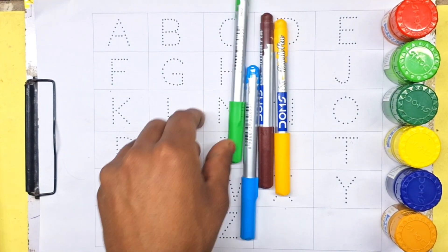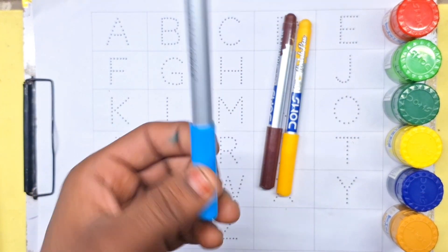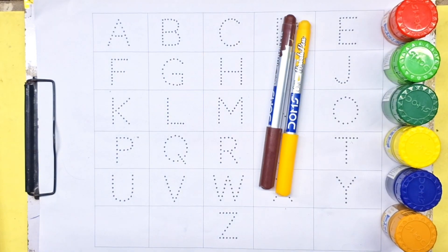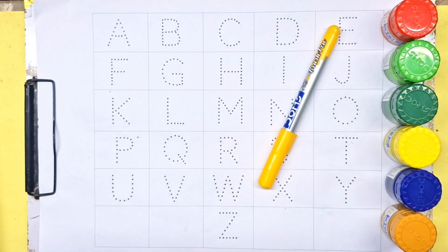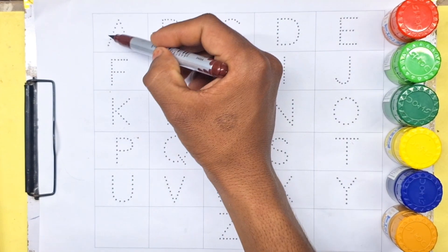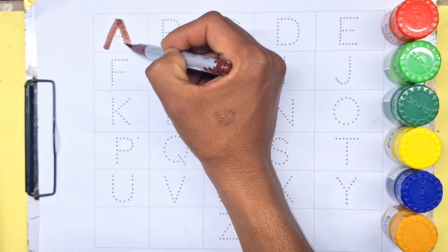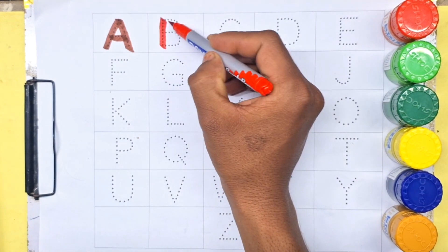Purple color, violet color, sky blue color, brown color, yellow color. A for apple and B for ball.